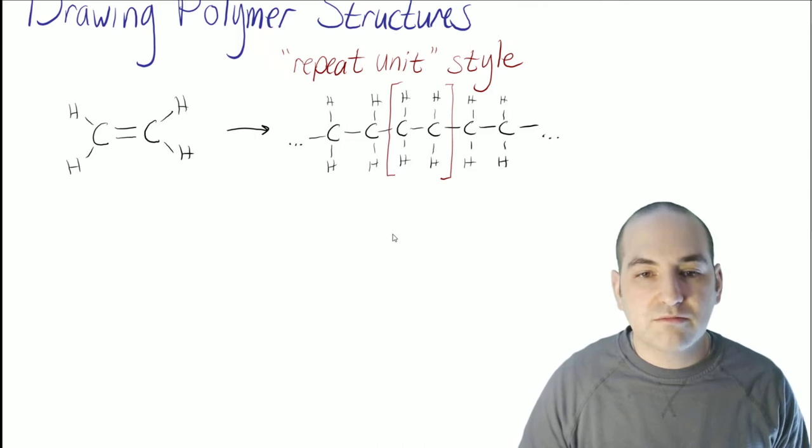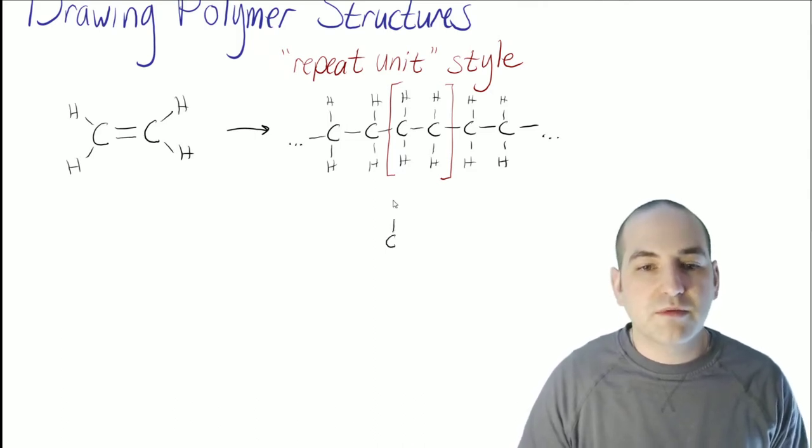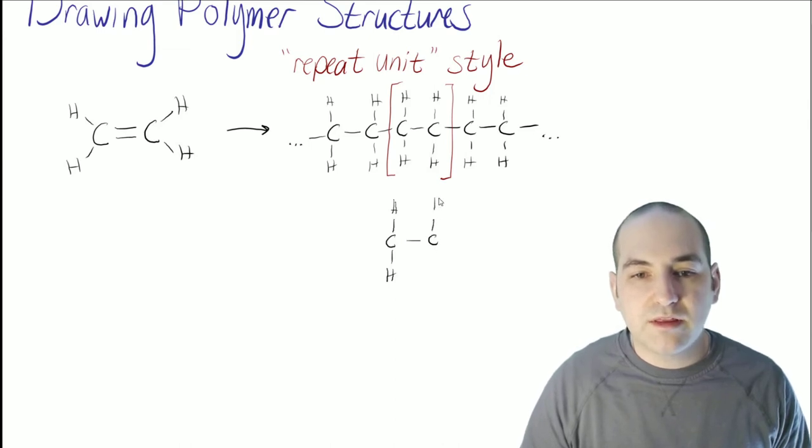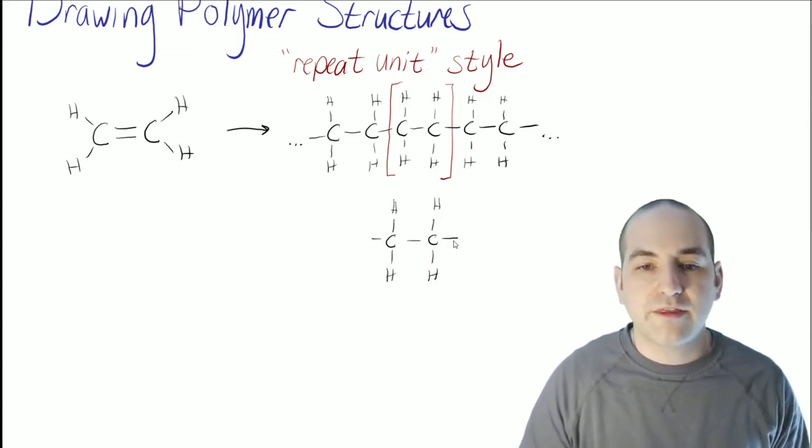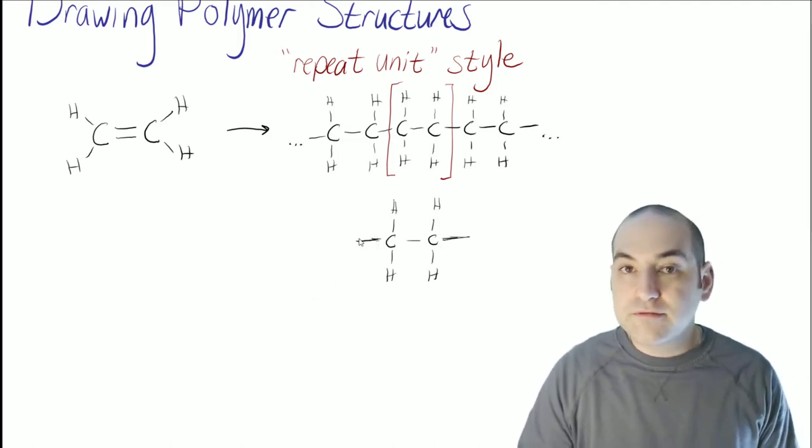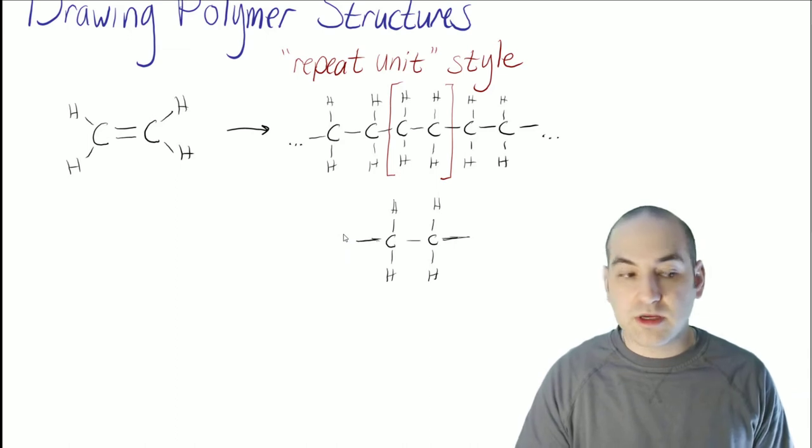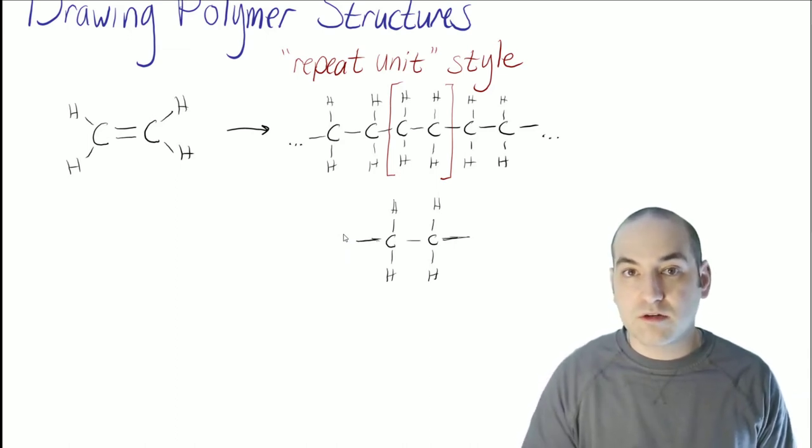All right, so first is we could take just the same type of structure, the same type of Lewis structure, but only draw that one repeat unit, that one part that keeps repeating over and over again. That's actually enough to express the entire structure because we're saying it's repeating over and over again.